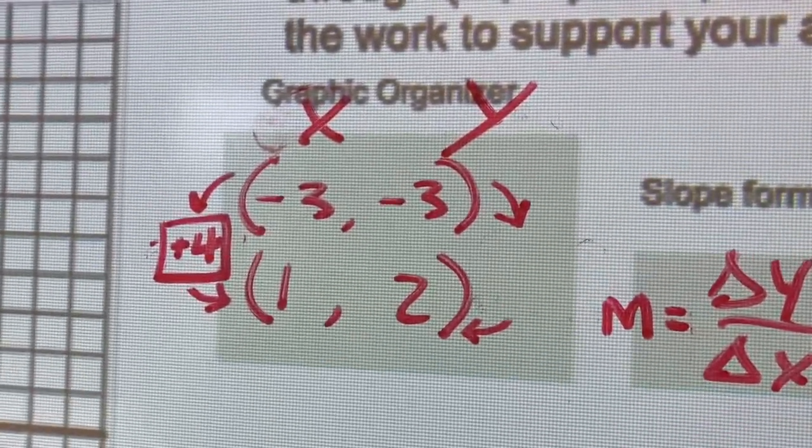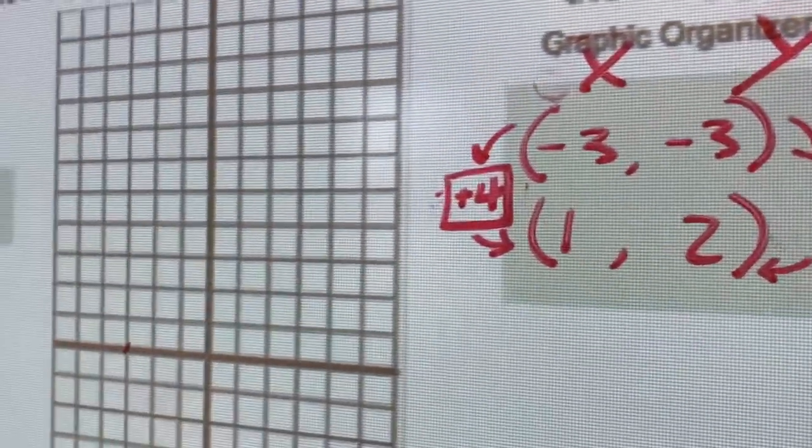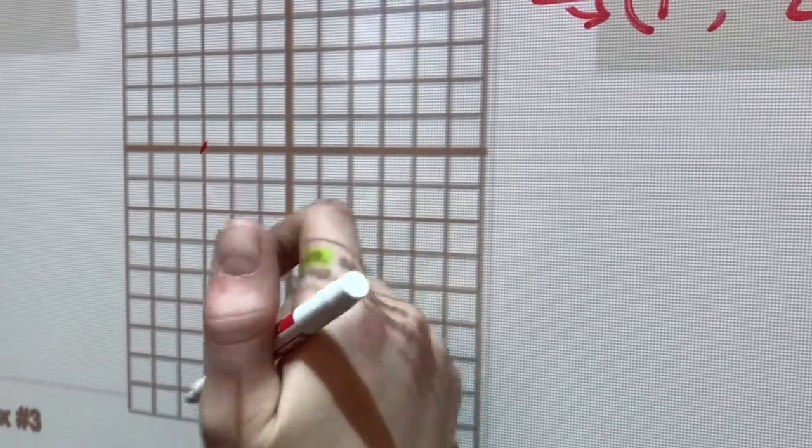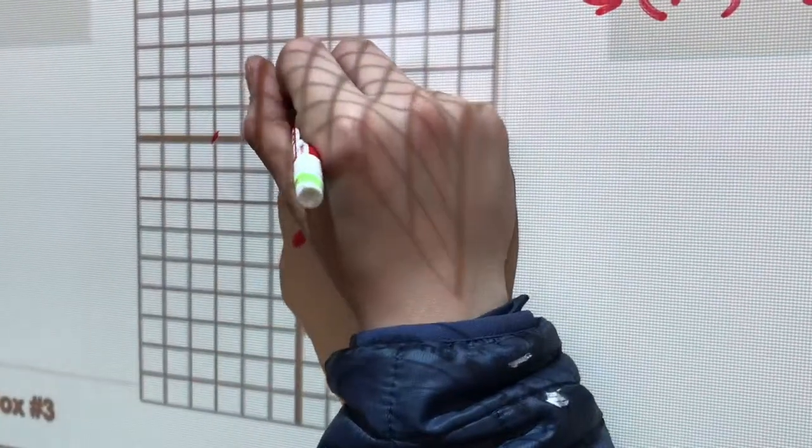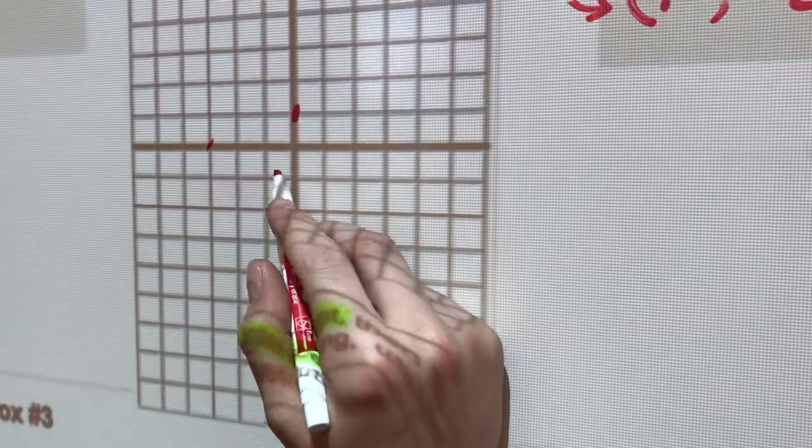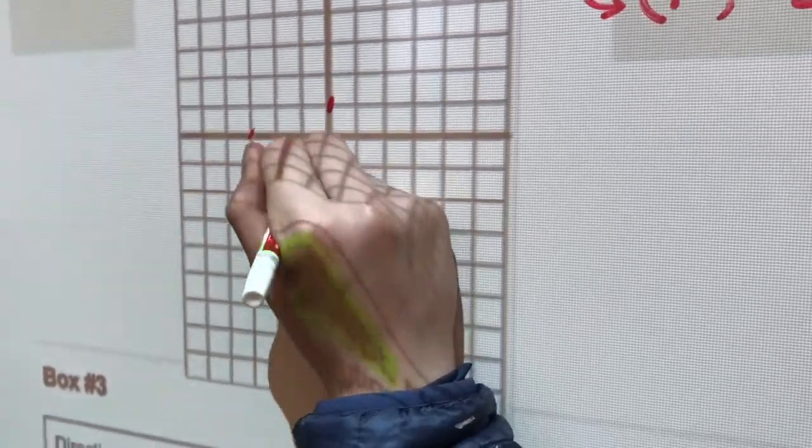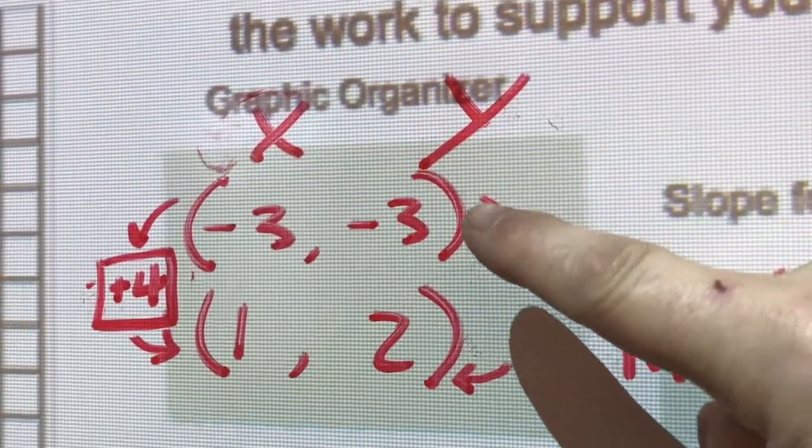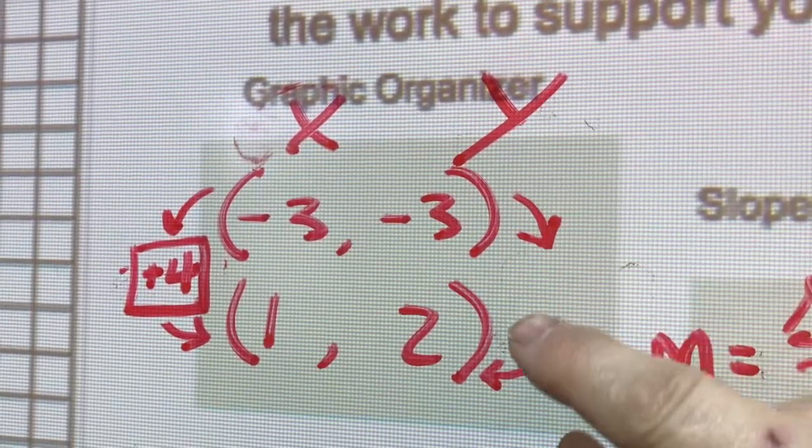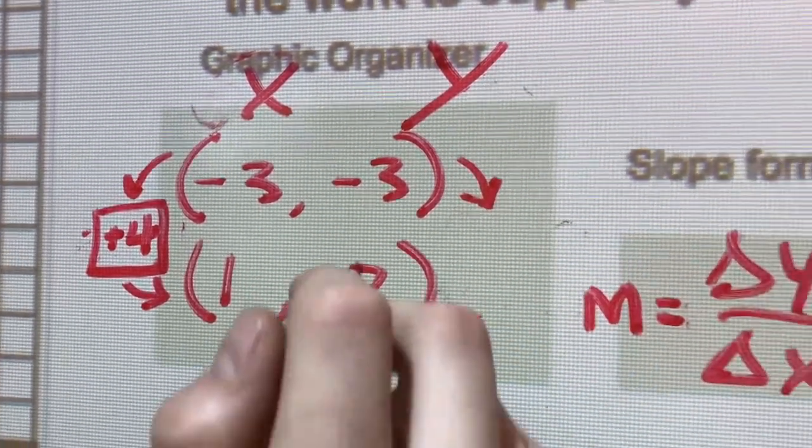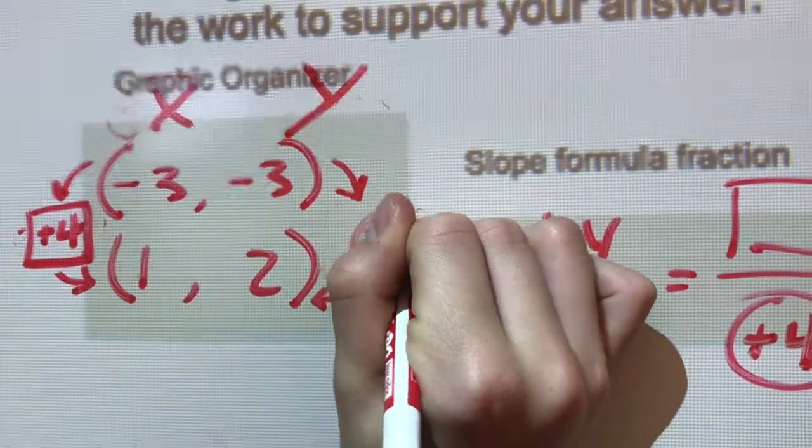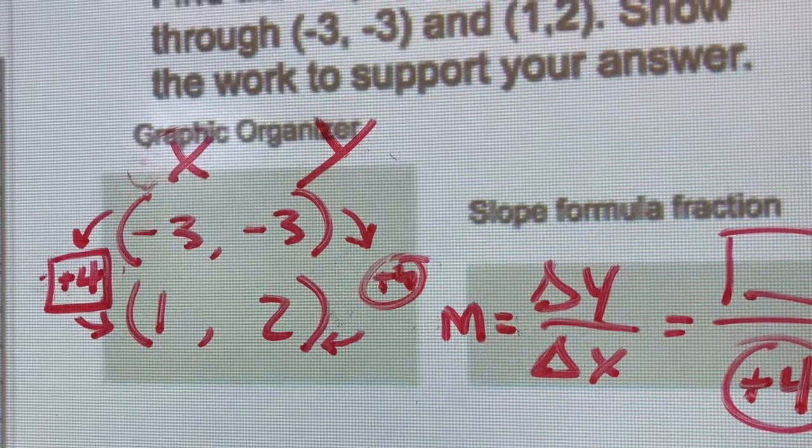Now find your change in y. So I'm going to erase this. So I'm 3 feet underground, so I'm right here. And I go 1 foot above ground, so I'm right here. Positive 4 is up, and that's my y. Okay, so you went from 3 feet underground to 2 feet above ground. So you went positive 5.